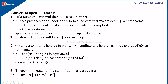Next, convert to open statements. 'If a number is rational then it is a real number.' The presence of the indefinite article 'a' indicates we are dealing with a universally quantified statement — the universal quantifier is implicit. Let p(x): x is a rational number and q(x): x is a real number. Then the statement becomes: for all x, p(x) → q(x), meaning if x is rational then x is a real number.